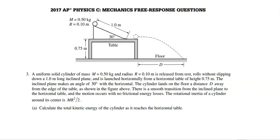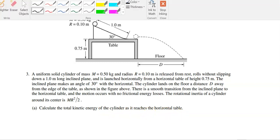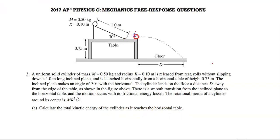For part A, I'm going to go through and give the rubric — why each thing is worth one or two points. So we want to calculate the total kinetic energy of the cylinder as it reaches the horizontal table. That's going to be this point right here, and we are starting from this point up there. I'm going to say this bottom height is zero. This looks like a good old energy conservation problem where we have two points.